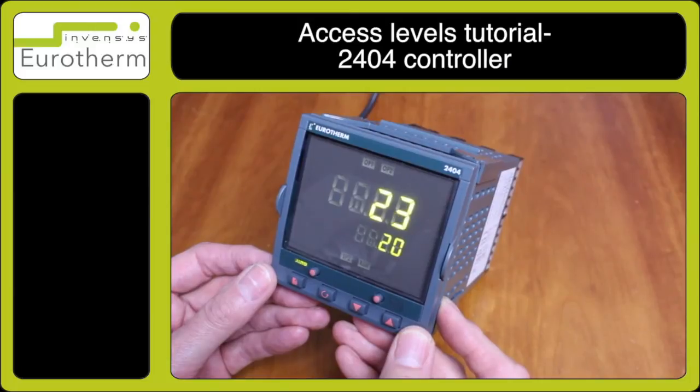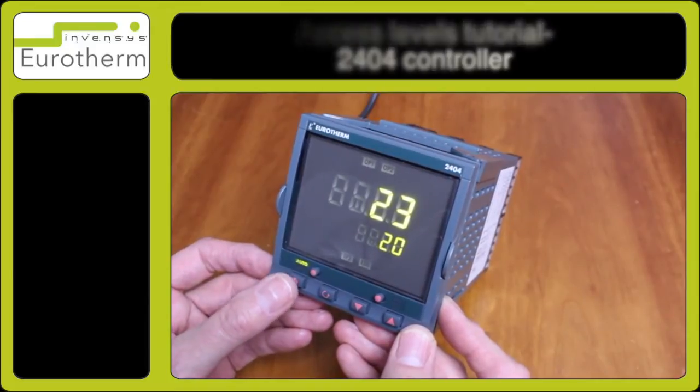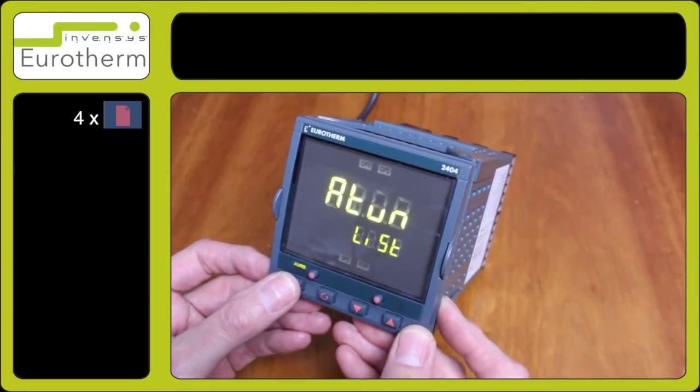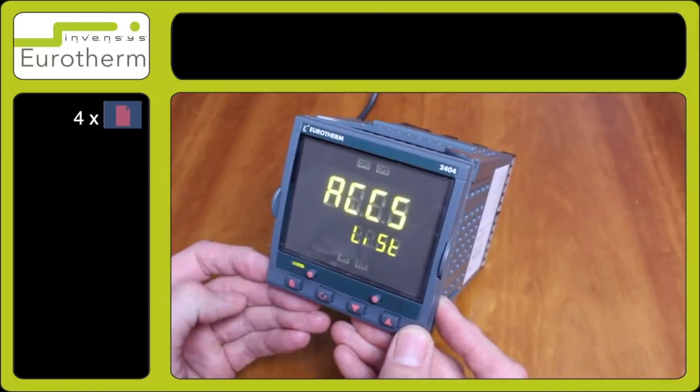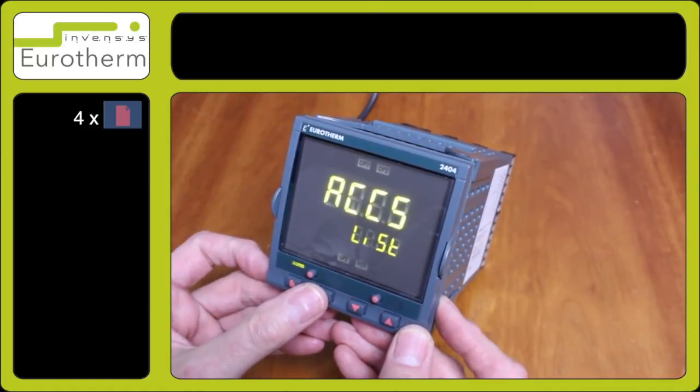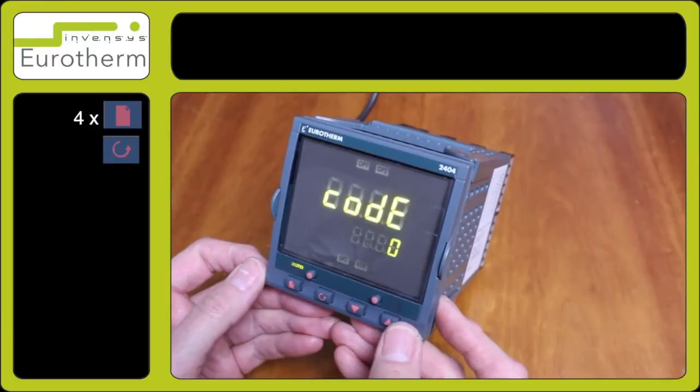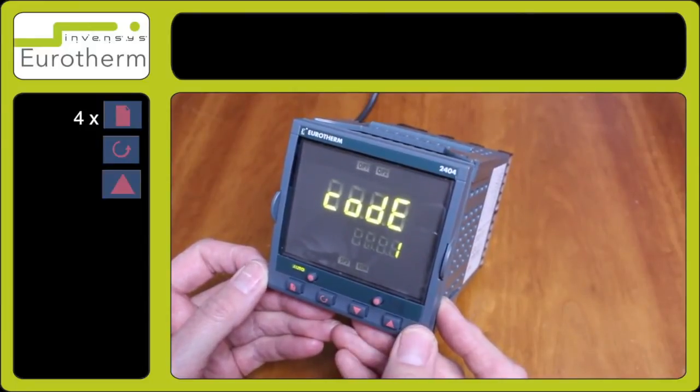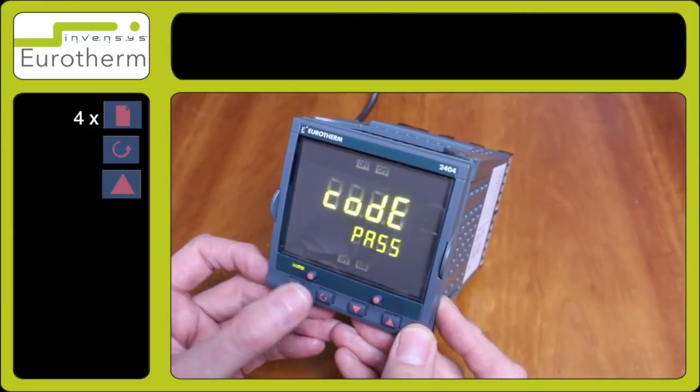In this tutorial, I will demonstrate how to access the different levels for configuration. First, press the page key until you come to access. Press the scroll key to show code 0, then press the up arrow key for code 1. Observe pass.